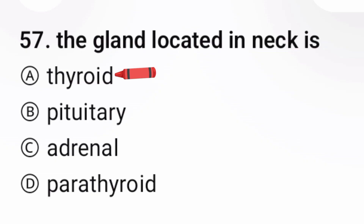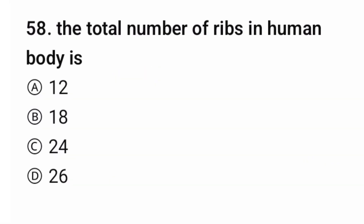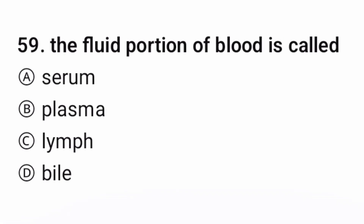Question 57: The gland located in the neck is — thyroid. Question 58: The total number of ribs in the human body is — the correct option is C, 24. Question 59: The fluid present in blood is called — the correct option is B, plasma.